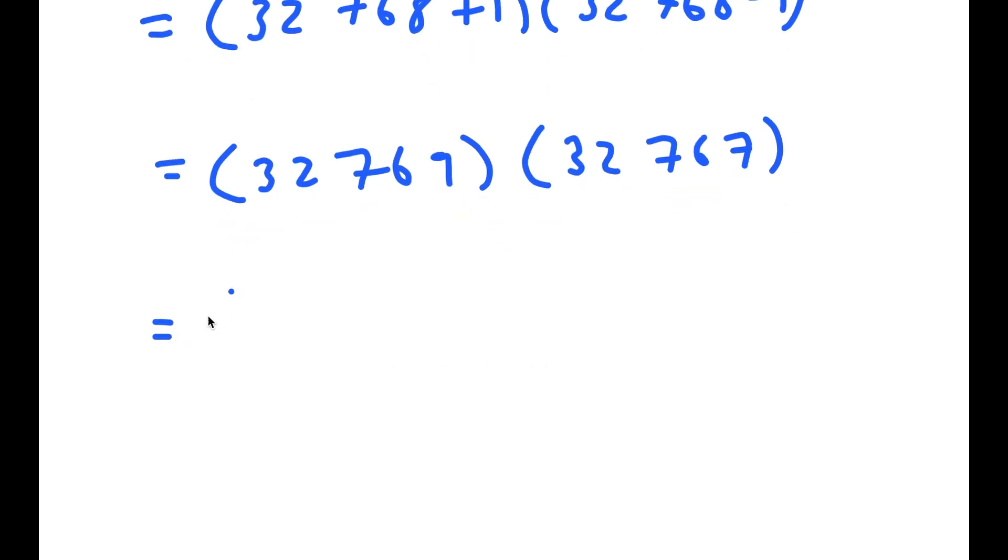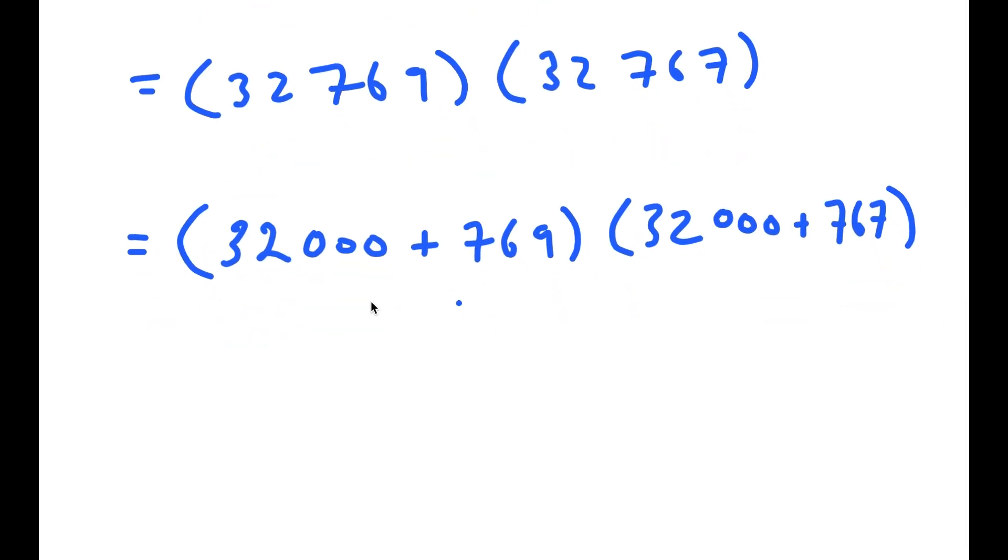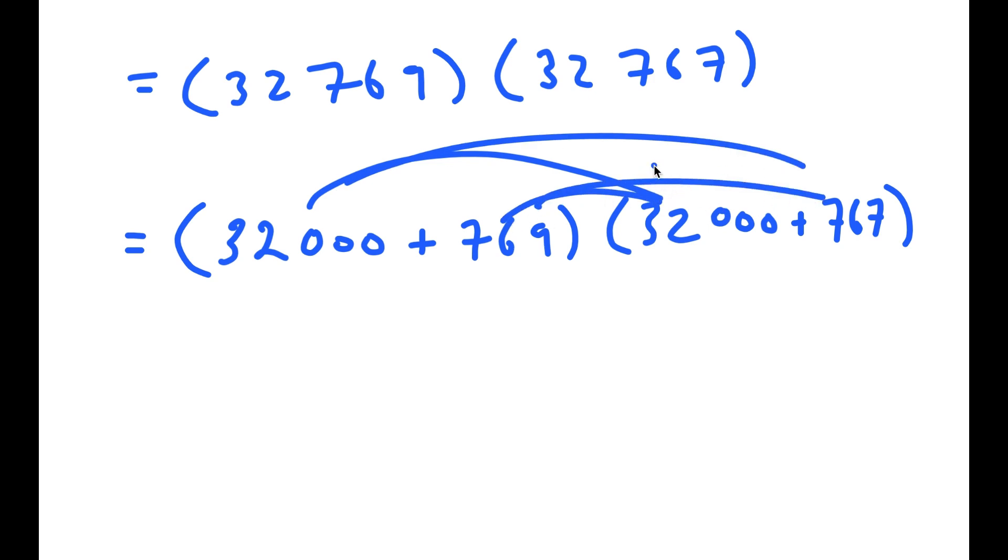Now, a simple way to solve this, instead of having to actually multiply them the regular way, is to write this as 32,000 plus 769 times 32,000 plus 767. Now, I'm going to distribute. So, I get 32,000 times 32,000, which is equal to 1,024,000,000, this is 1 billion 24 million. And now I have this plus 32,000 times 767 plus 769.